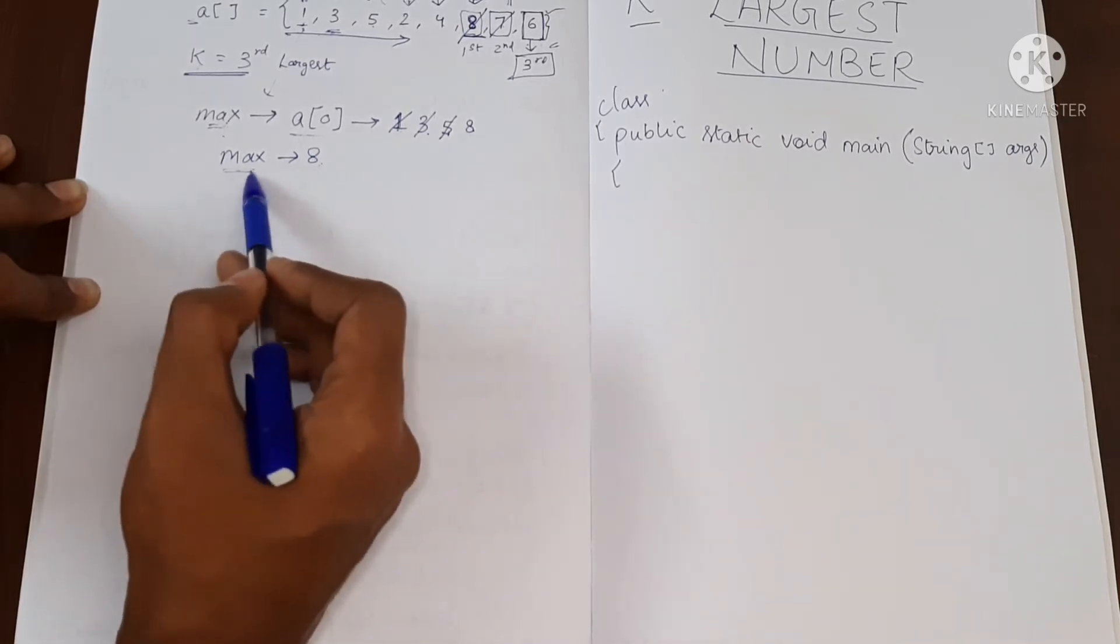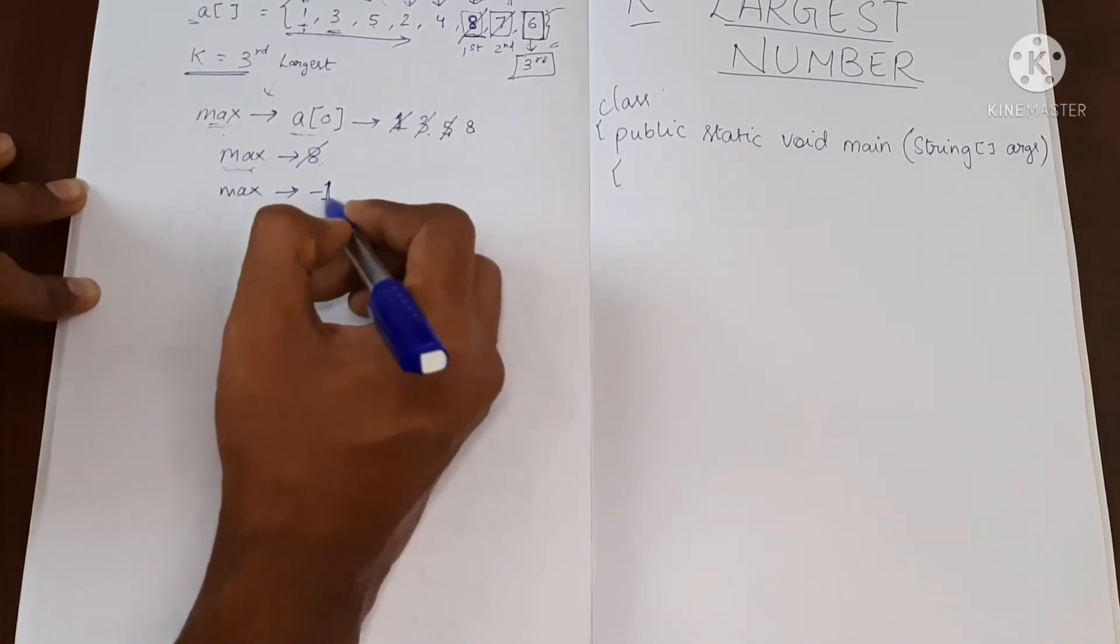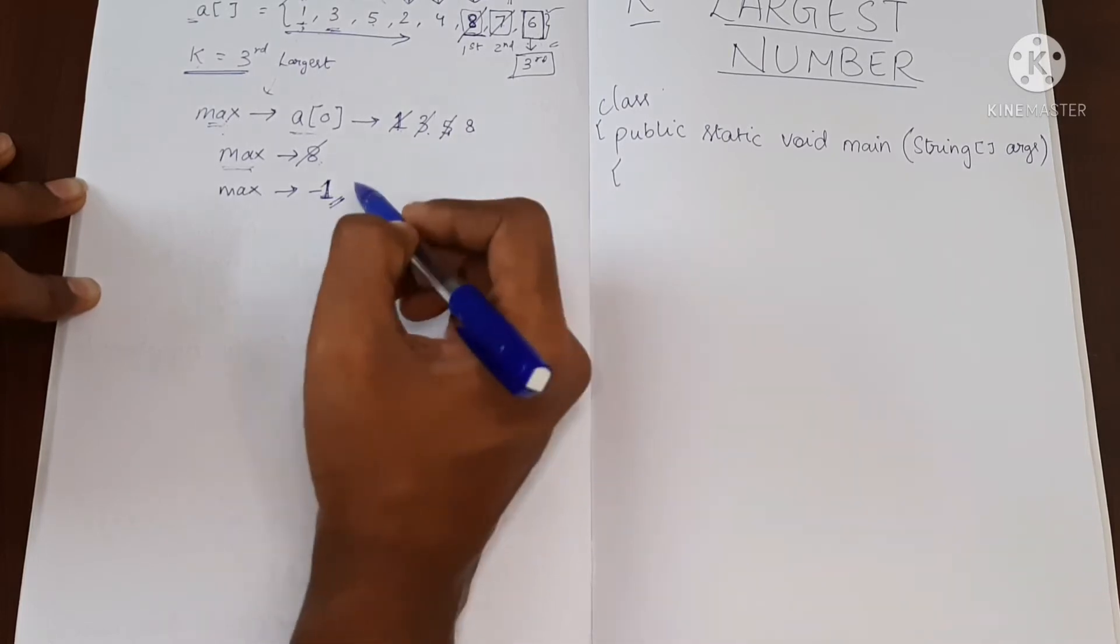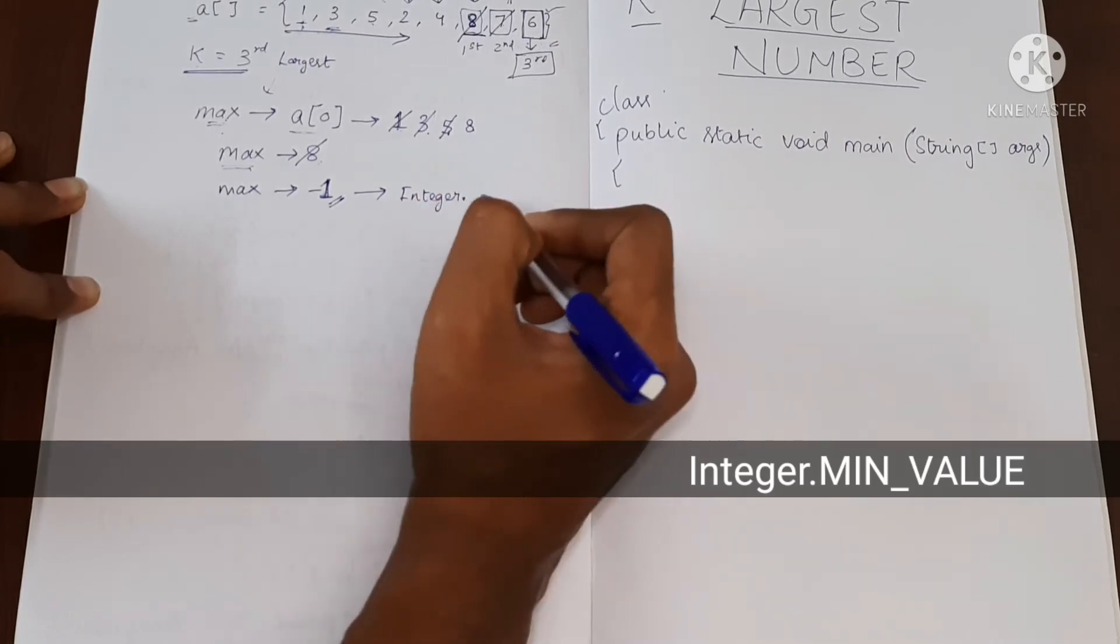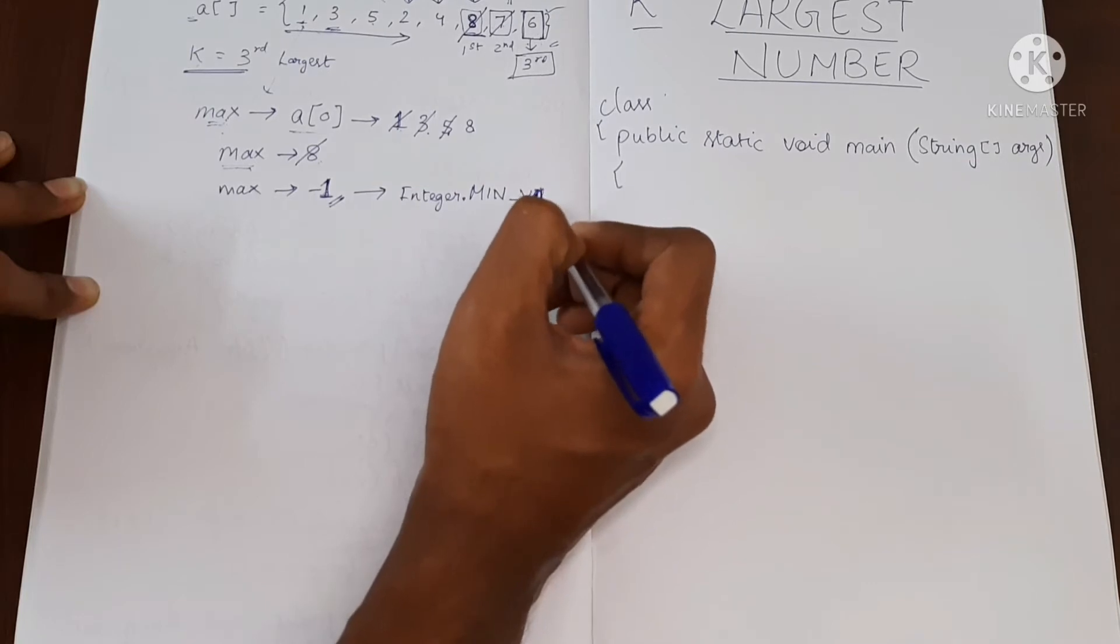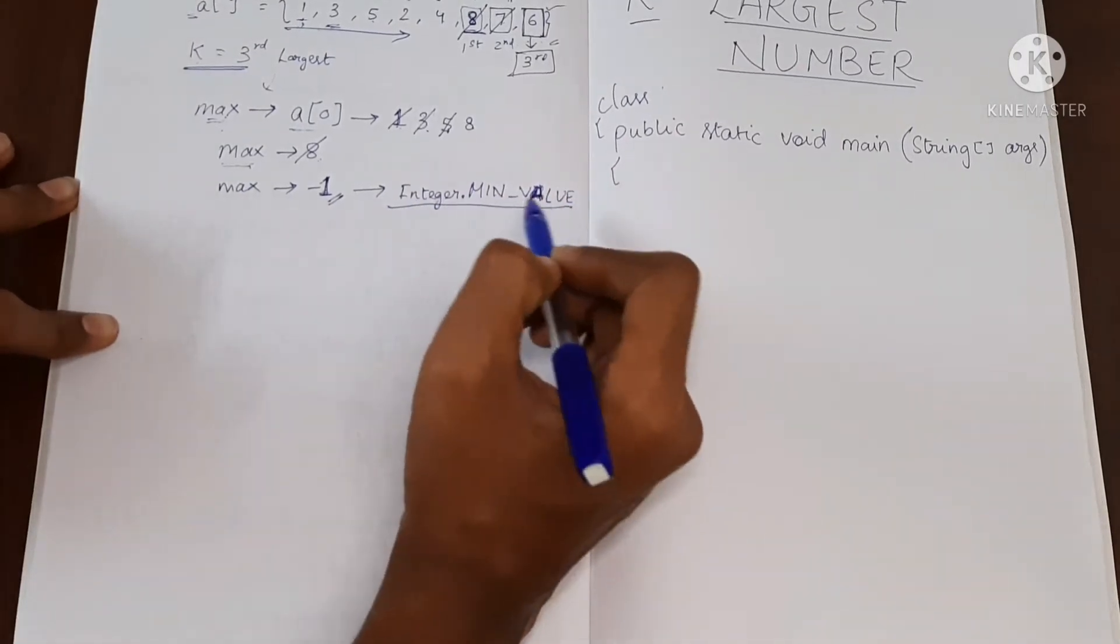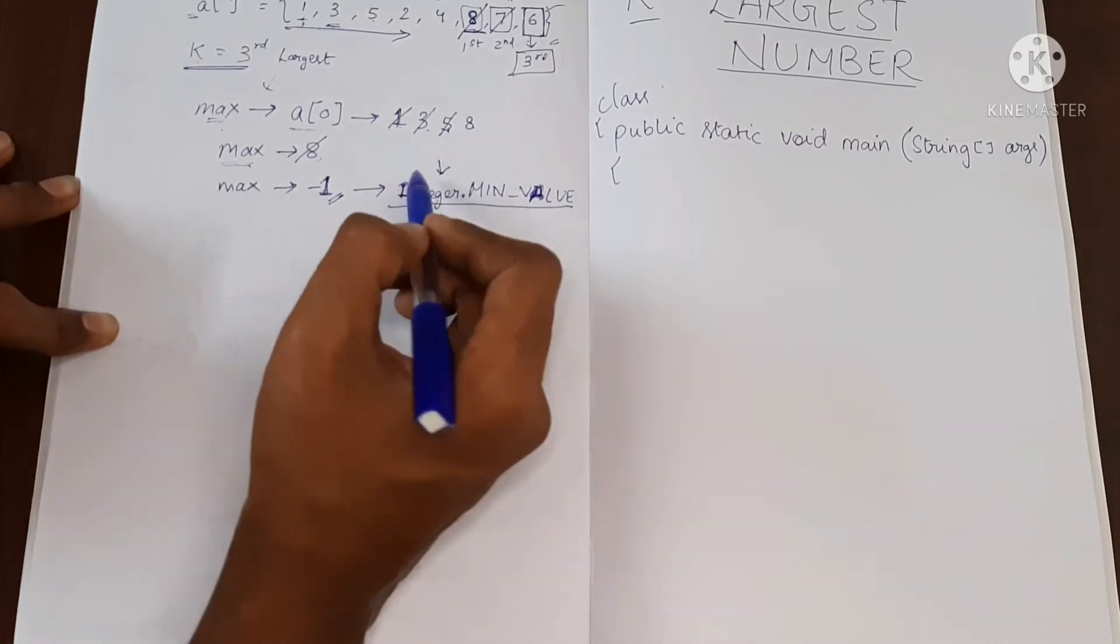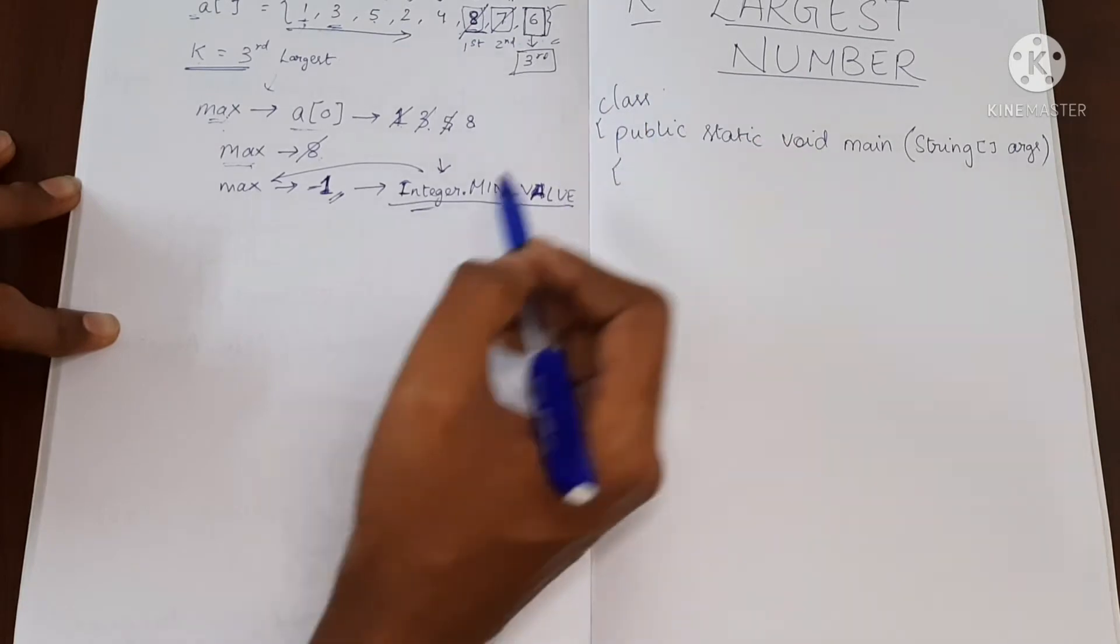Now I'm going to make this max as minus 1. I'm going to change this and make it minus 1. For simplicity I'm telling you to make it as minus 1. Even better approach is to make it as Integer.MIN_VALUE. What this will do is it will store the minimum value possible in Java for integer and it will store it in max. Instead of minus 1 let's do this.